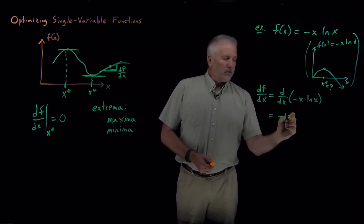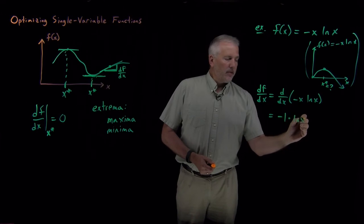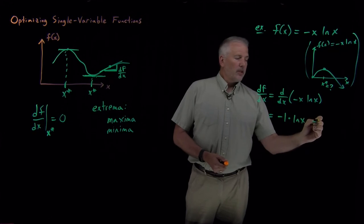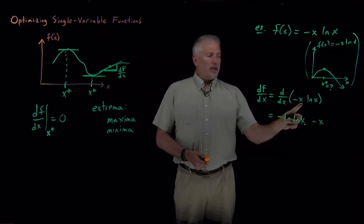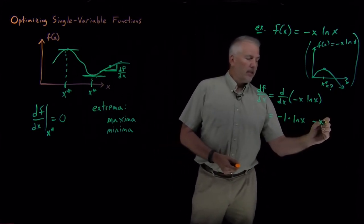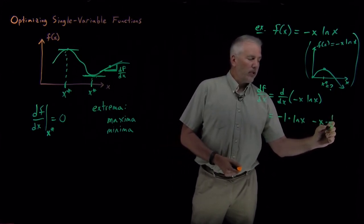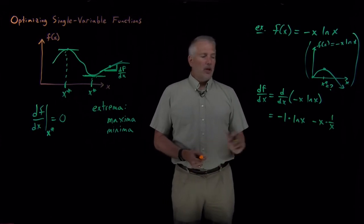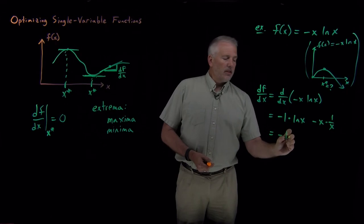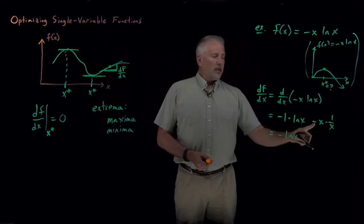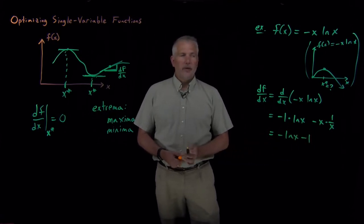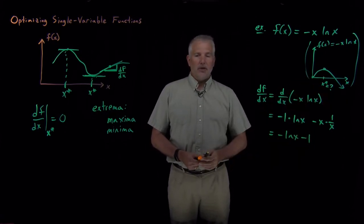So I've got a negative sign. Derivative of x gives me one. And then I leave the rest of the function alone. And then the product rule tells me also take the negative sign in the x, leave them alone, and take the derivative of the second part, the derivative of log x. And derivative of log x is one over x. So I can clean this up a little bit. Negative one times log x. And I've got a minus x over x, so I've got minus one. So the derivative of this function is minus log x minus one.